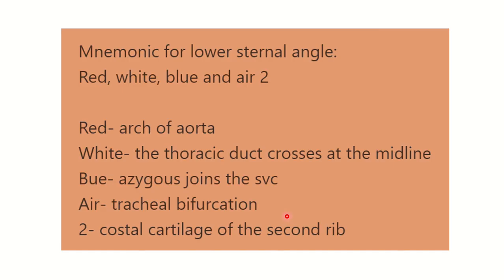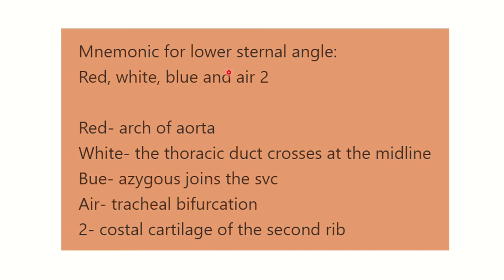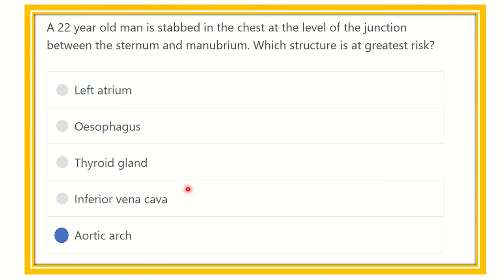We can use a mnemonic — RED WHITE BLUE — to remember these structures. RED means artery, which is the arch of the aorta. WHITE means the thoracic duct (lymphatics). BLUE means the azygos vein draining into the superior vena cava. The 'T' stands for tracheal bifurcation, and '2' refers to the costal cartilage of the second rib.